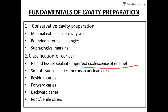In pit and fissure caries, the base of the triangle is at the dentinoenamel junction and the apex is at the enamel surface. In smooth surface caries, it occurs in unclean areas with poor oral hygiene — on buccal, lingual, or proximal surfaces. These are not inherently plaque-retentive areas, but poor oral hygiene leads to smooth surface caries. Here, the base of the triangle is along the enamel surface and the apex points toward the dentinoenamel junction.